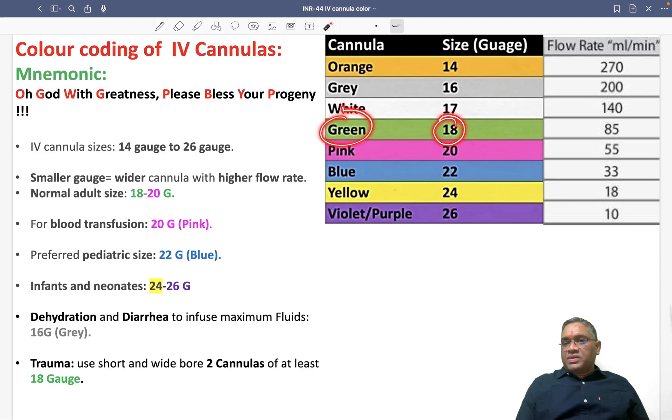Orange 14 gauge has a flow rate of 270 ml per minute. As the gauge number increases, the cannula gets narrower and the flow rate decreases. 14 gauge has maximum flow at 270, then 16 has 200 ml per minute, 17 white has 140 ml per minute, and green 18 gauge, which we use in trauma cases, is 85 ml per minute.